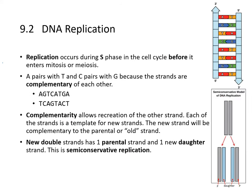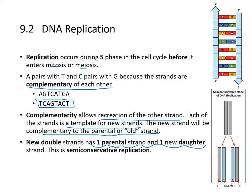DNA replication occurs during the S phase — the synthesis phase — of the cell cycle, before the cell enters mitosis or meiosis. Because A pairs with T and C pairs with G, strands are complementary to each other, allowing recreation of the other strand. Each strand serves as a template for a new strand, which is complementary to the parental strand. The new double strand has one parental and one new daughter strand — this is called the semi-conservative model of DNA replication.